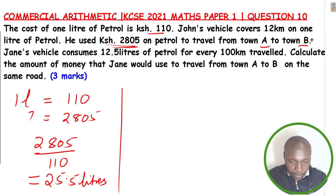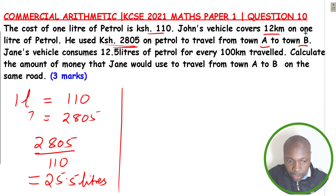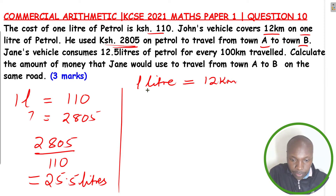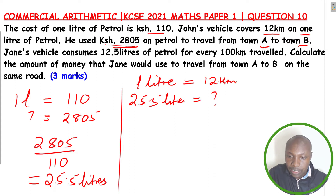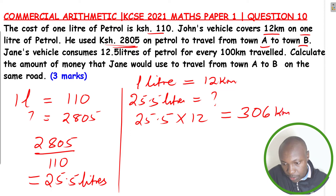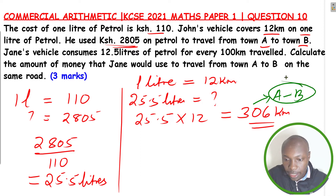Now after getting the liters, we use the statement that John's vehicle covers 12 kilometers on 1 liter of petrol. So 1 liter goes for 12 kilometers, and he used 25.5 liters. So what about 25.5 liters — how many kilometers? This gives us the distance from A to B.